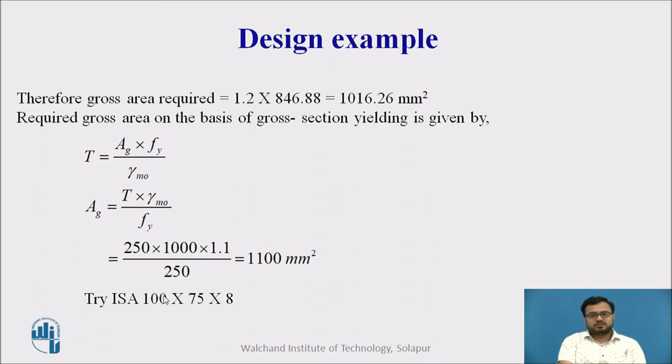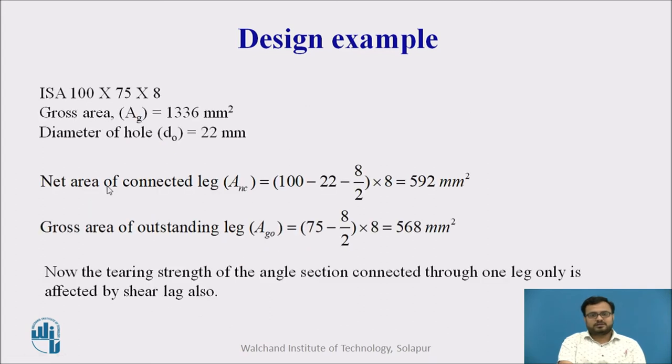Then we will select a section depending on this area. ISA 100 by 75 by 8. Area is this. Diameter of bolt hole is this. Connected area is this. Outstanding area is this. I hope you know how to calculate these areas.